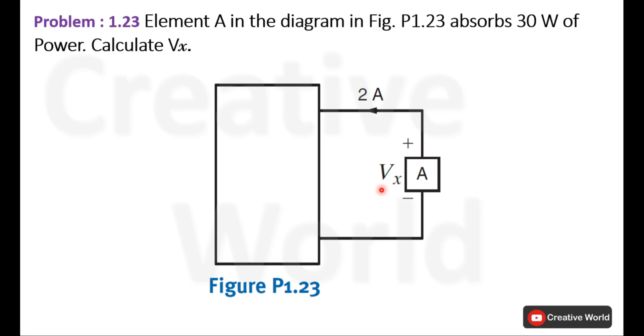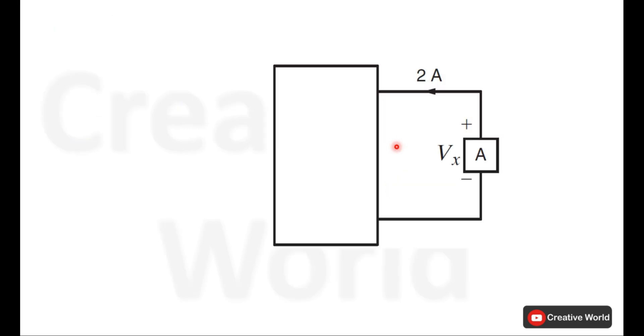We need to calculate the voltage across this element. I have redrawn the circuit here. Direction of current is indicated by these blue arrows. Here if we see, current is entering from negative terminal of element A and leaving from positive terminal of element A.